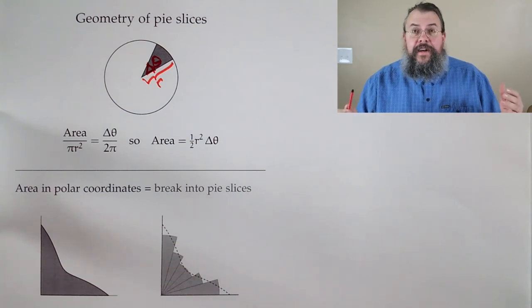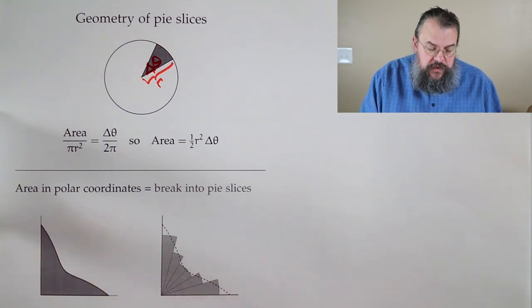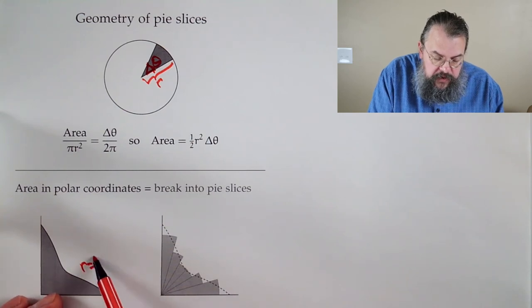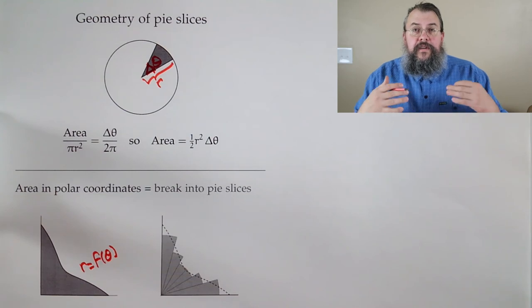Now we have our idea. We say, OK, so suppose we have this curve. And we say this is the curve. We want to find the area. Here's our r equals f of theta. And we break things up into slices.